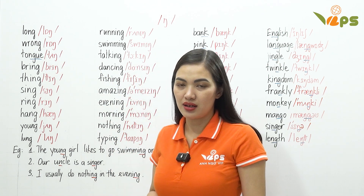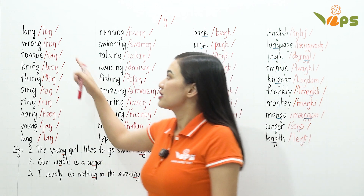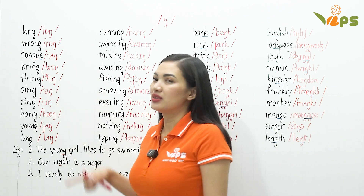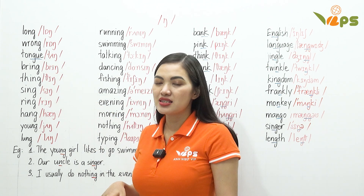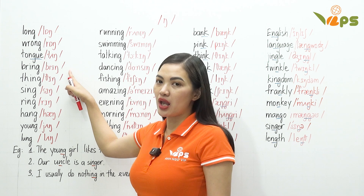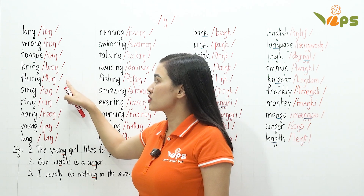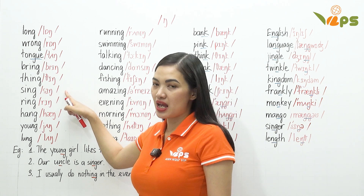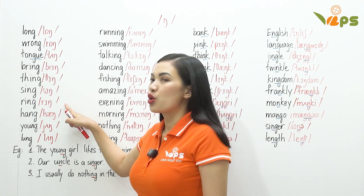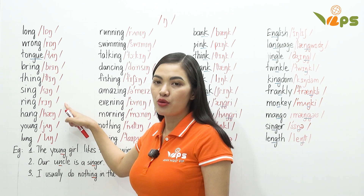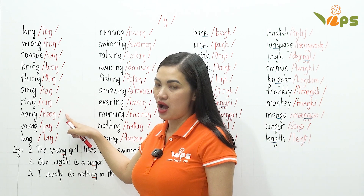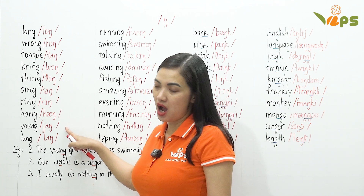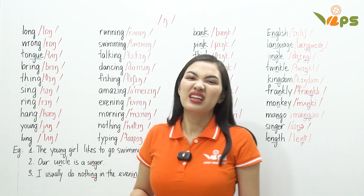This one: long. This: wrong. This one: tongue. This: bring. This one: thing. Sing. Ring. This: hang. Tongue. Lung.